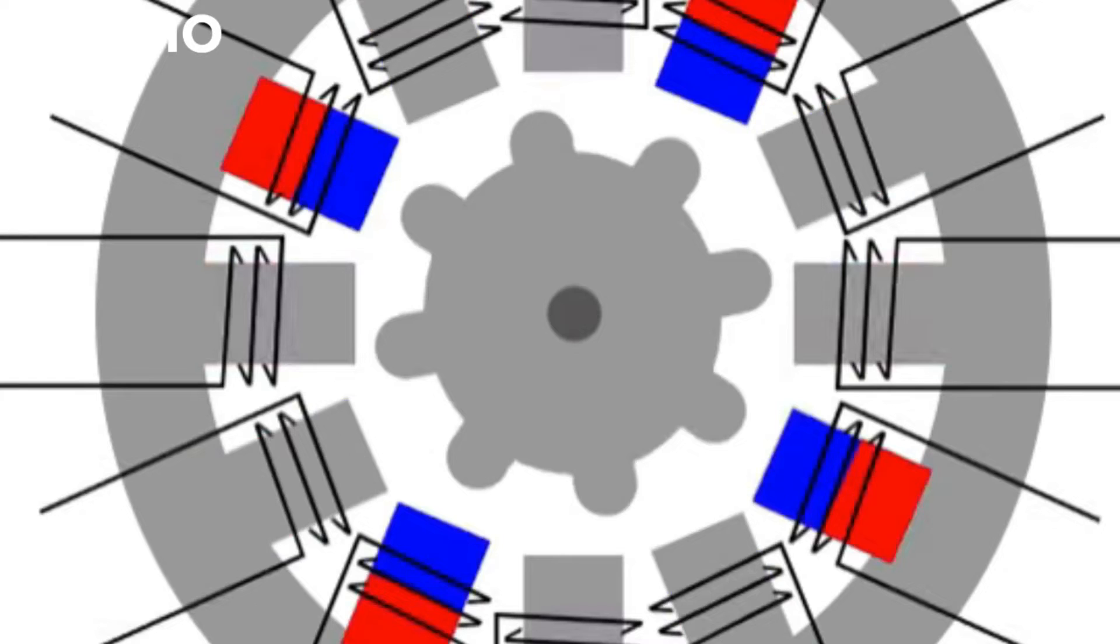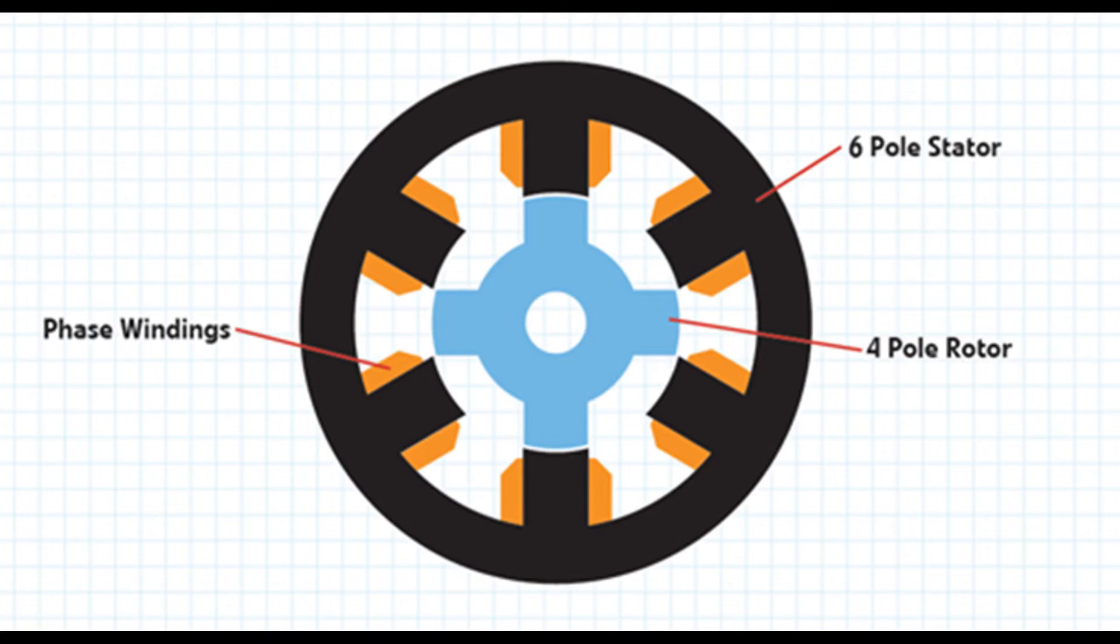The number of stator poles and rotor poles must be different. As a rule, the number of poles in the stator is greater than that of the rotor. A typical combination is six quarters, that is, six stator poles and four rotor poles.